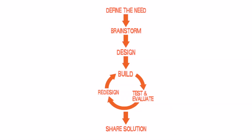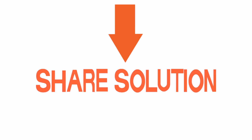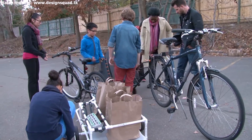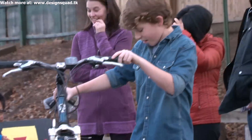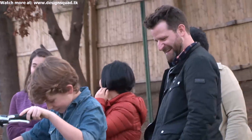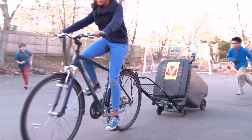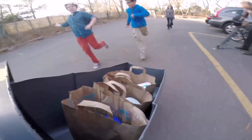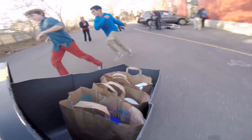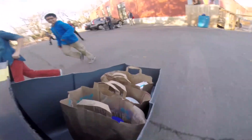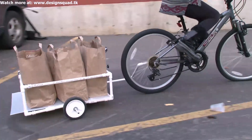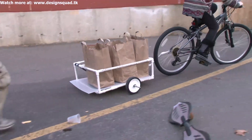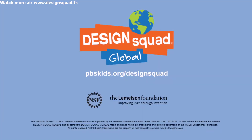The final step in the design process is sharing your solution with others. The trailer made out of the trash can is a little bit more sturdy, but it was bulky, had a wide turning radius, and didn't have a way to keep eggs safe. I liked the PVC pipe one better. My eggs are safe!